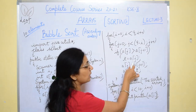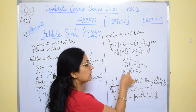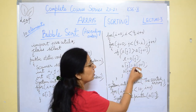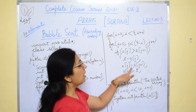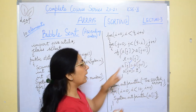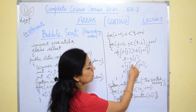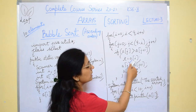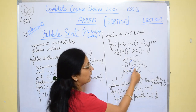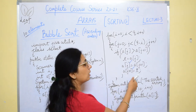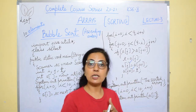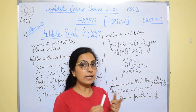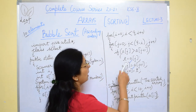For swapping, we use a temporary variable: t equals a[j], then a[j] equals a[j+1], then a[j+1] equals t. In selection sorting, swapping happens between a[i] and a[min]. Here in bubble sort, swapping happens between a[j] and a[j+1].